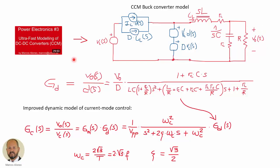Now we can apply the same process as in the previous video to the buck converter model. This is the dynamic response of the output voltage versus duty cycle G_d. When we consider the modulator response including the sampling effect, the modulator transfer function G_m is no longer just 1/V_PP — it now includes a second-order factor. While the open-loop system remains stable, this factor introduces a change in the total phase of the system, as we will see in the next slide.